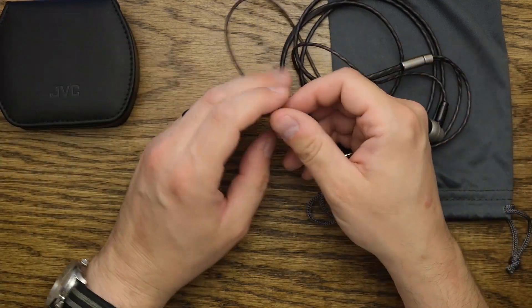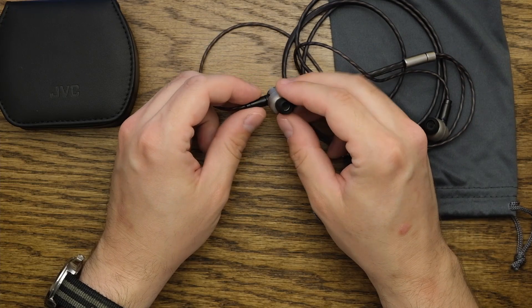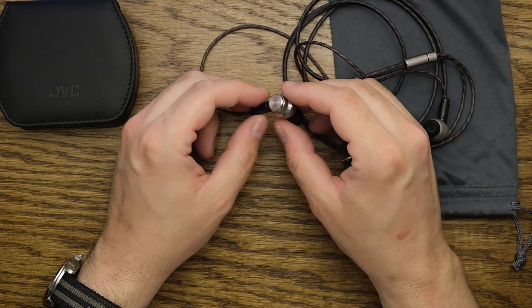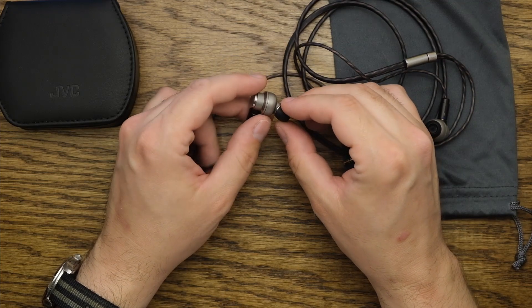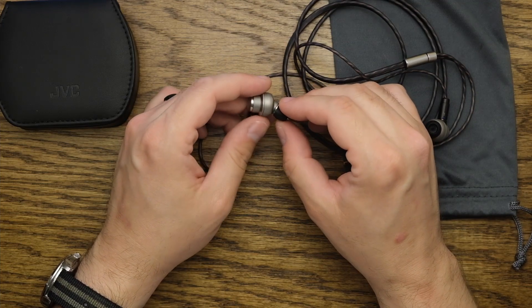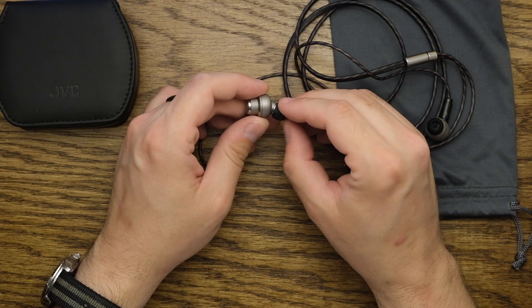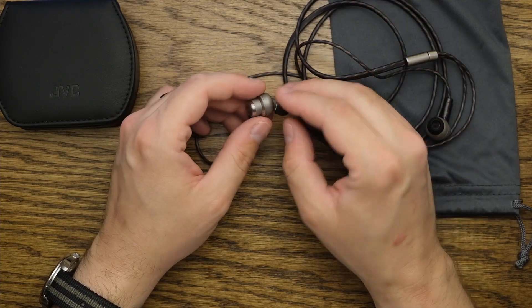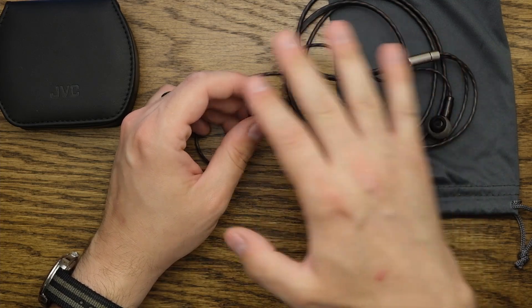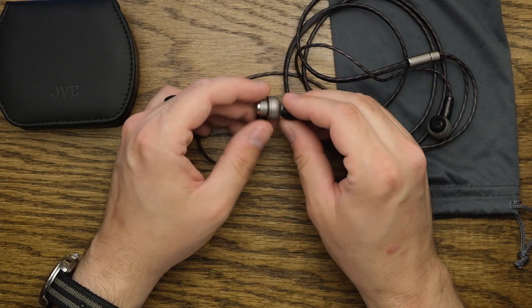This earphone has an interesting backstory. Basically JVC made an FW-01 or something similar, and people over at Super Best Audio Friends teamed up and were testing material and put some cotton fiber in here from a Q-tip or something like that, and it improved the treble response by dampening it just the right amount to give it a really nice frequency response.